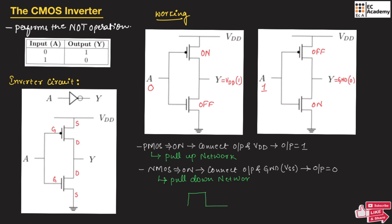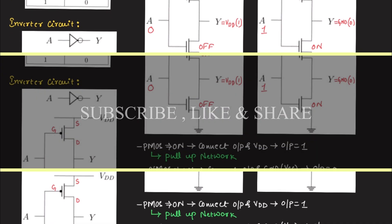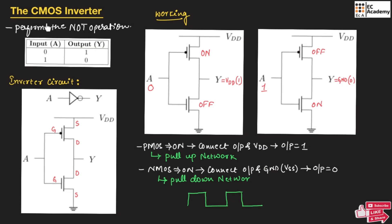This process will continue — PMOS will give VDD and NMOS will give the output as ground. This is the CMOS inverter. Hope you have understood the topic. Thank you.